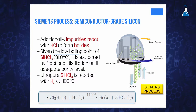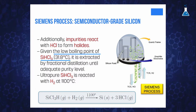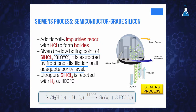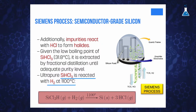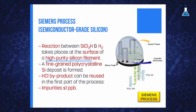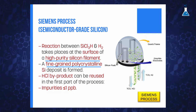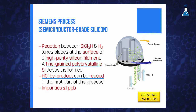This process ensures that some of the impurities present in the crude silicon react with hydrogen chloride to form the corresponding halides. Considering the low boiling point of trichlorosilane, which is only 31.8 degrees Celsius, it is possible to extract it by exhaustive fractional distillation until reaching the adequate purity level. The resulting ultra-pure trichlorosilane is then reacted with hydrogen at 1100 degrees Celsius. The reaction takes place at the surface of a high purity silicon filament, which is continuously covered with high purity silicon in the form of a fine-grained polycrystalline deposit. The hydrogen chloride obtained as byproduct can be recycled back into the first part of the process.